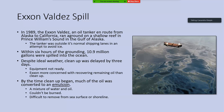The first one is the Exxon Valdez spill. This one predates all of you — it occurred in 1989, when an oil tanker traveling from Alaska to California ran aground on a shallow reef in the Gulf of Alaska in an area called Prince William Sound. This was an accident caused by poor captaining of the ship; the tanker was outside its normal shipping lanes in an attempt to avoid ice. Within six hours of the grounding, 10.9 million gallons of oil had spilled into the ocean.